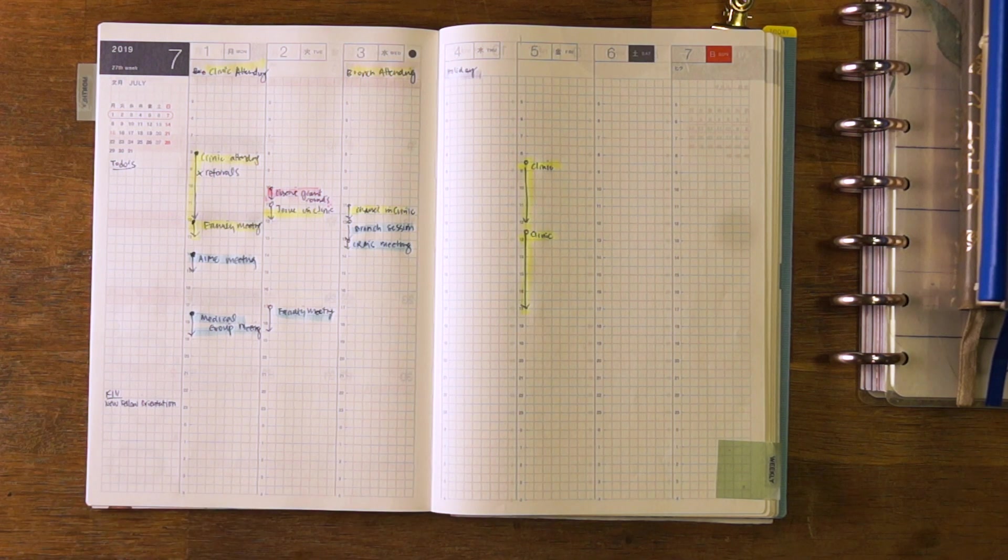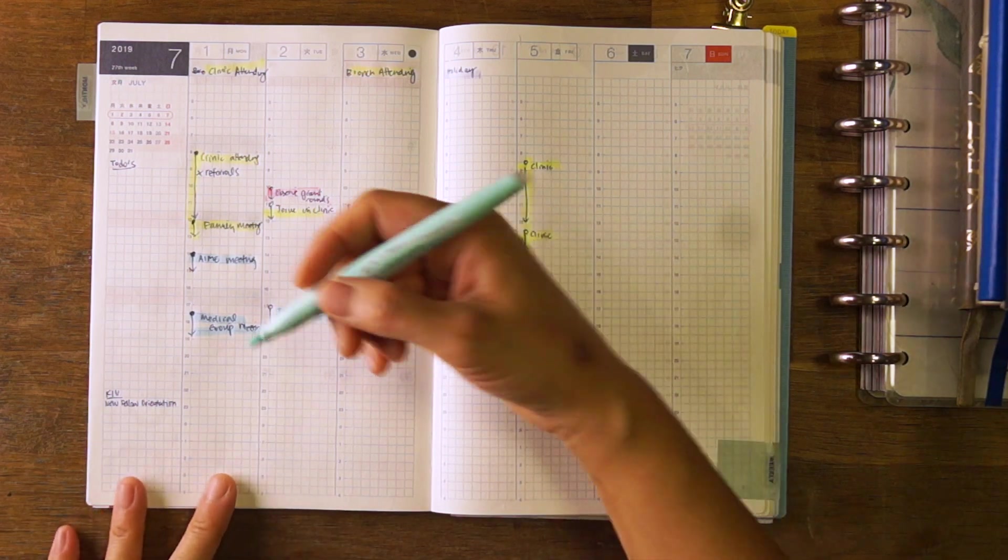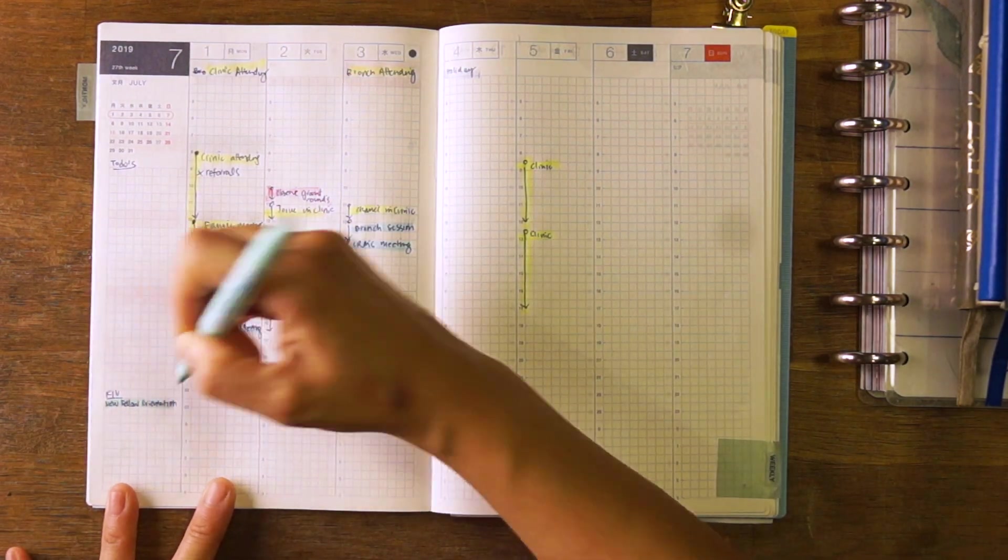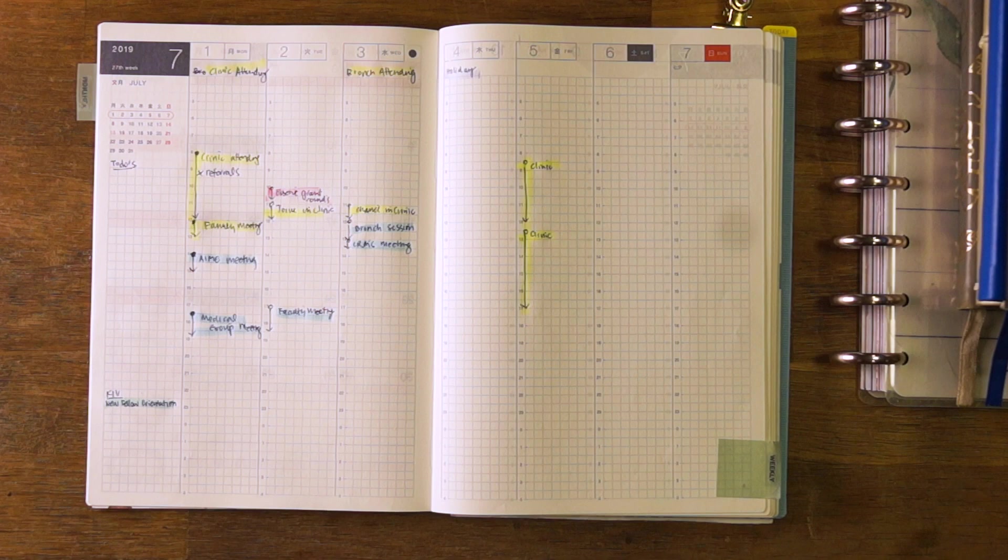And then I can also put items that are in my in-view. I think it's good to also highlight those, so I have a good idea of what's coming up and what I need to focus on for that week.